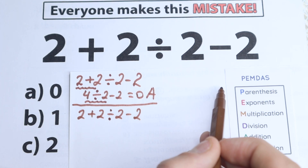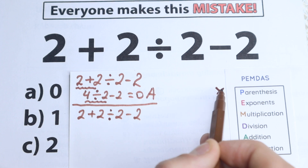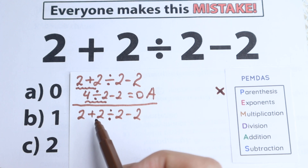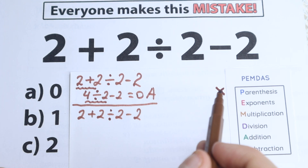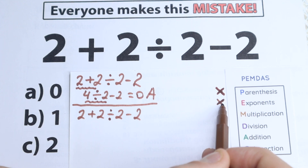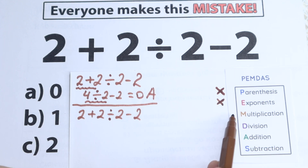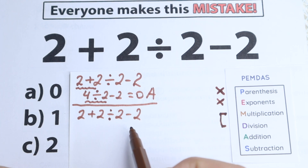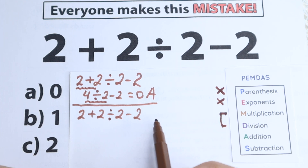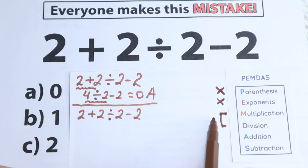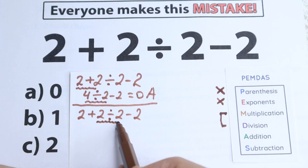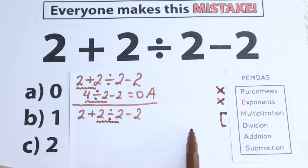The next step is exponents. Do we have any exponents? No — everything is to the first power, so we skip this step as well. The next step is multiplication. An important note: multiplication and division form one group. Now we scan the expression for division or multiplication. We don't have addition yet — we have subtraction — but right here we have division. So according to PEMDAS, we start with this division.